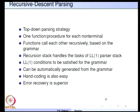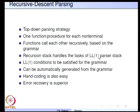Let us move on to recursive descent parsing. Recursive descent parsing is a top-down parsing strategy. Instead of a table-driven parser as in LL1, here we have an inline program with one function or procedure for each non-terminal. These are hard-coded programs rather than table-driven parsers. The functions call each other recursively — that is why this is called a recursive descent parser.